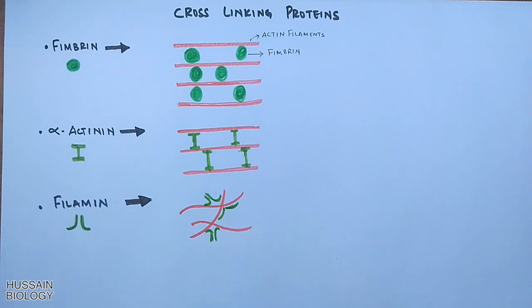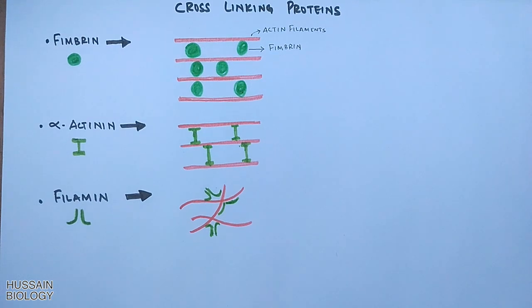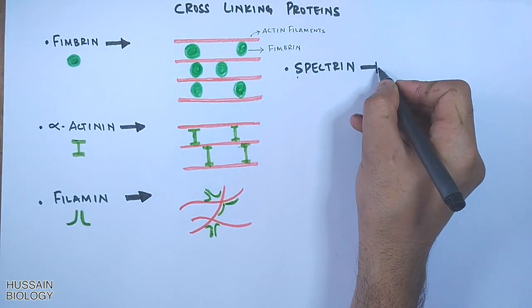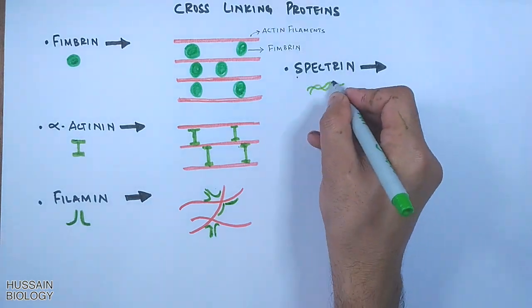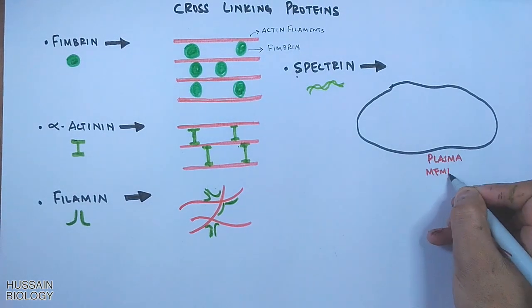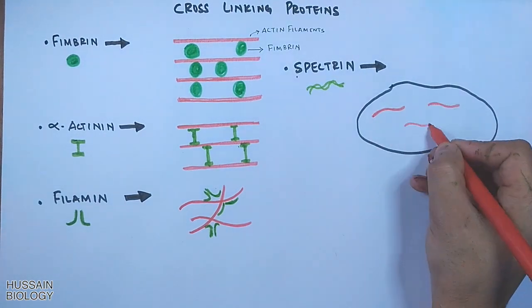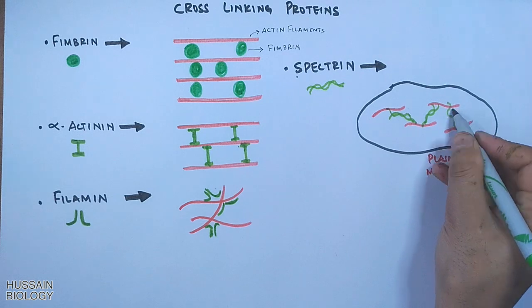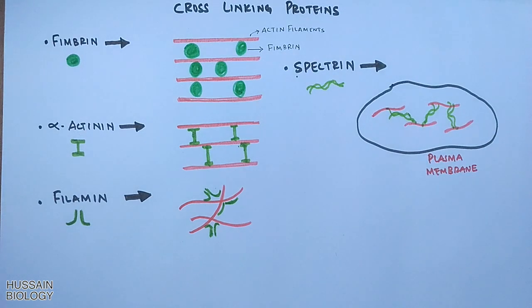Moreover, there are membrane binding proteins also, like spectrin. It attaches the filament to the cell membrane on its cytosolic face. This spectrin protein forms a mesh-like network of elements on the membrane, as shown in the diagram.